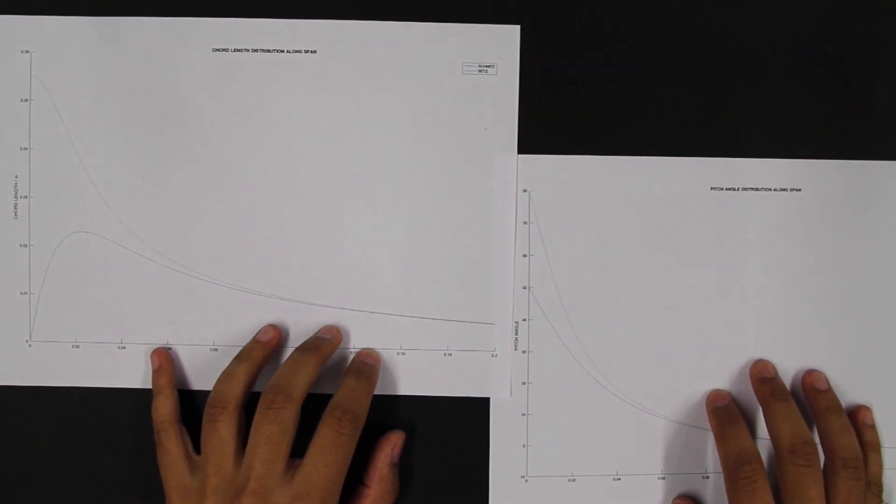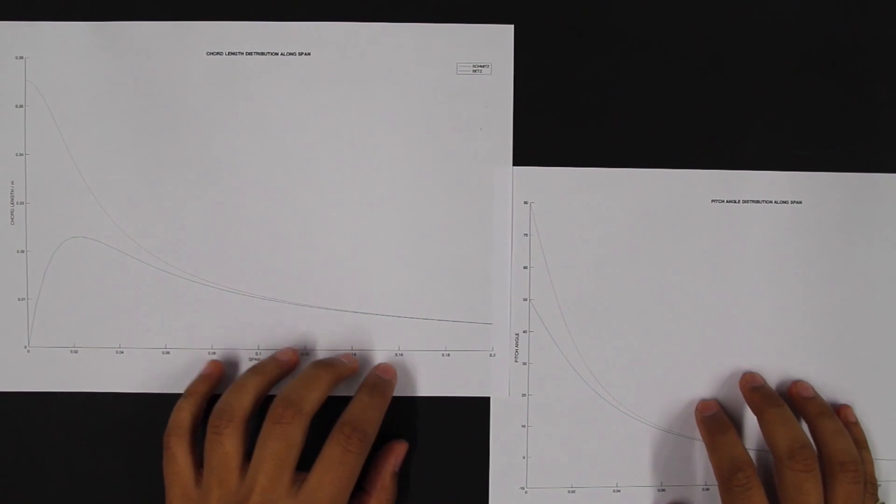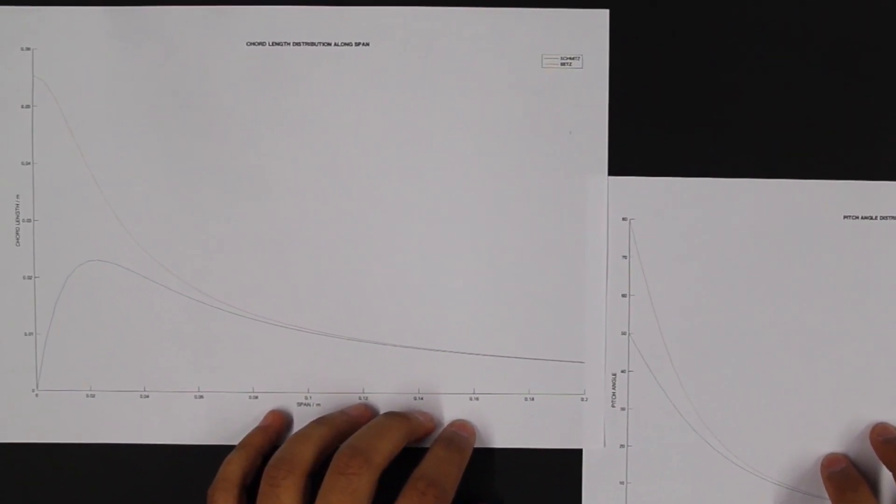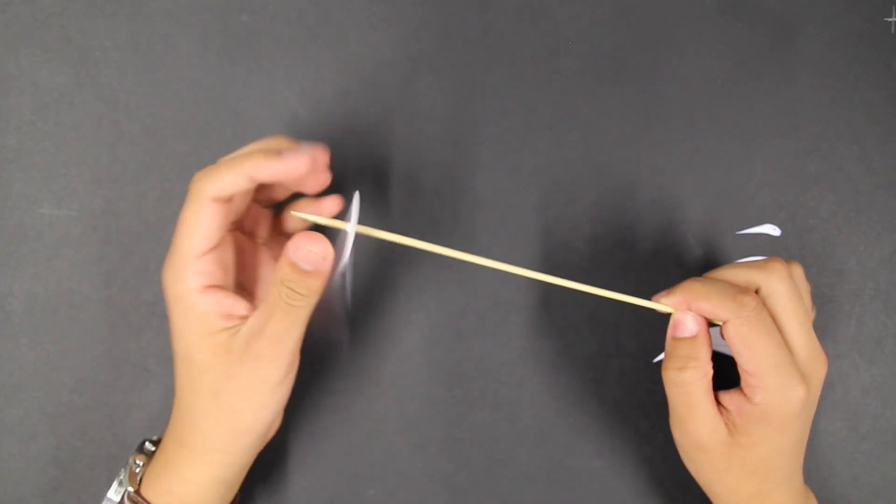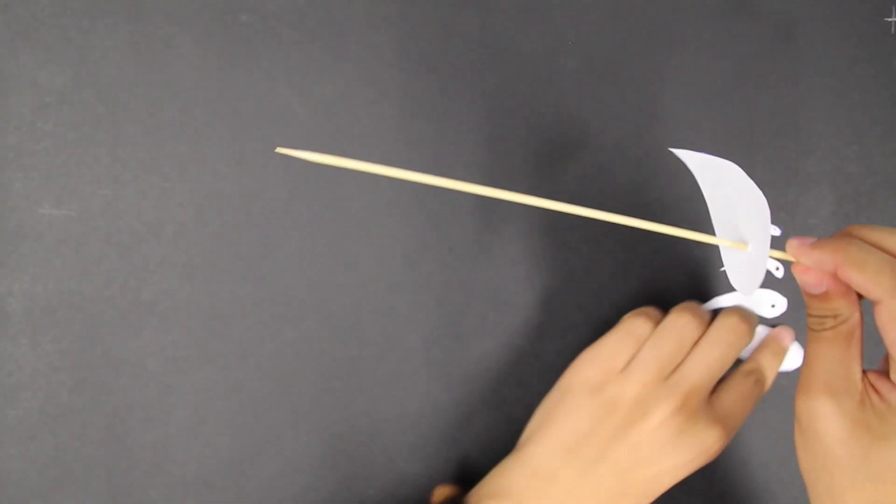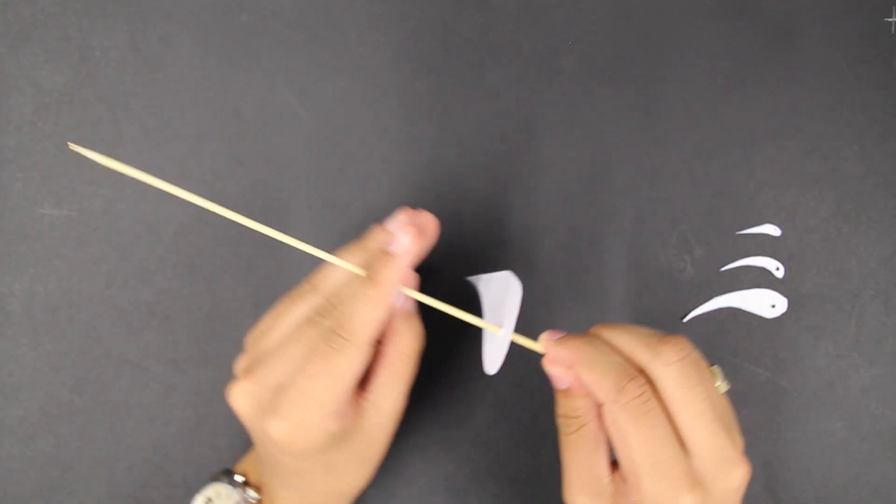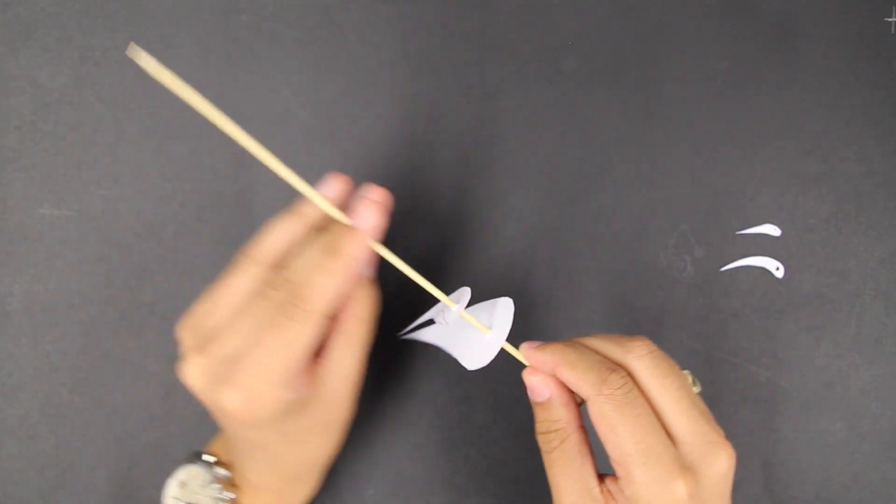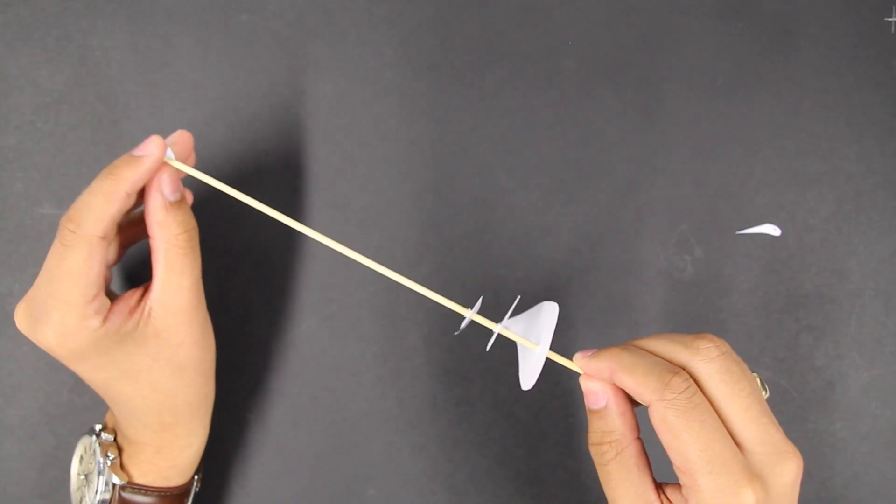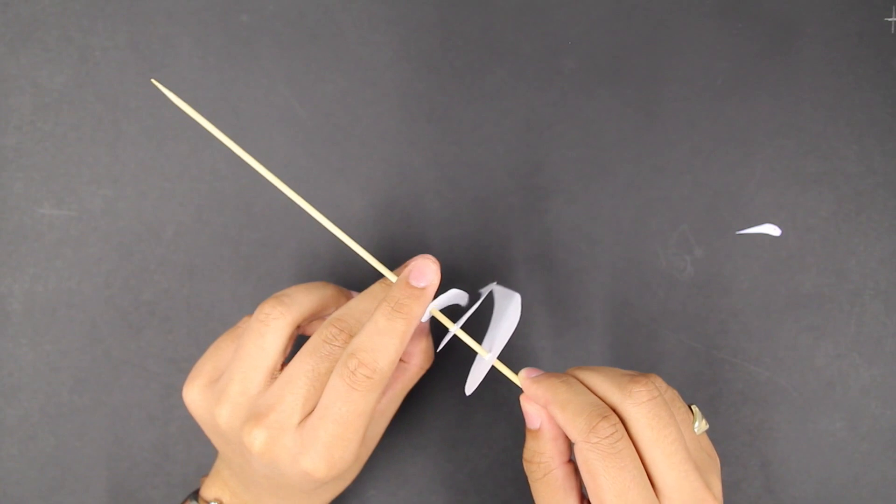Betz and Schmitz distributions for pitch and chord length were compared, but in the end the Betz distribution was selected because it provided greater structural integrity at the root of the blade. The different sized and orientated airfoils had to be linked together to form the blade. These were connected along the point at which the aerodynamic forces would generate no moment to avoid unwanted deformations in our blade. This point is known as the center of pressure.